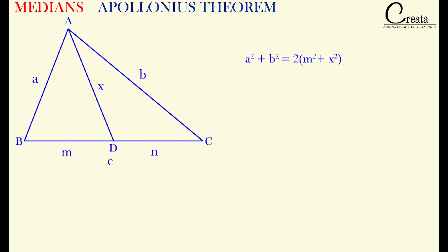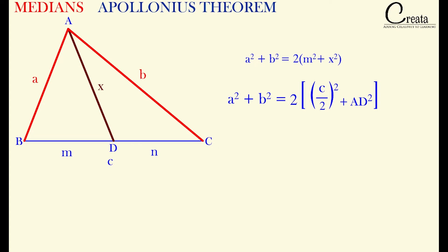Going back to the figure: a and b are the two sides, x is the median AD, and m is c/2 — that is, half of side BC. So we can write: a² + b² = 2((c/2)² + AD²). This relation is known as Apollonius theorem. The sum of the squares of any two sides equals twice the square of half the third side, plus twice the square of the median bisecting that third side.